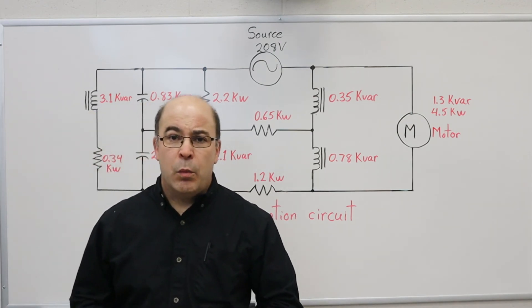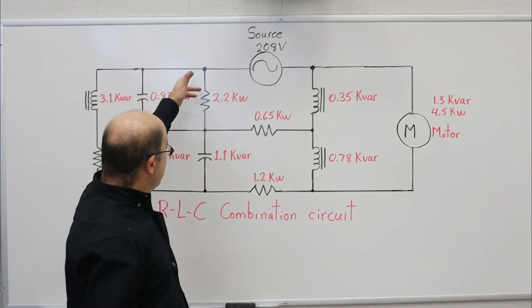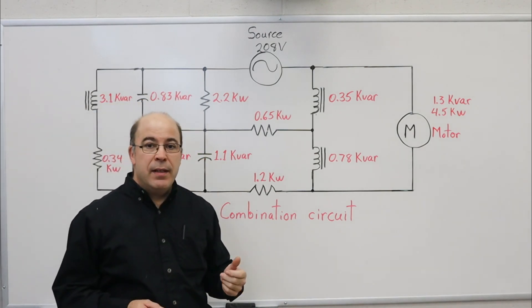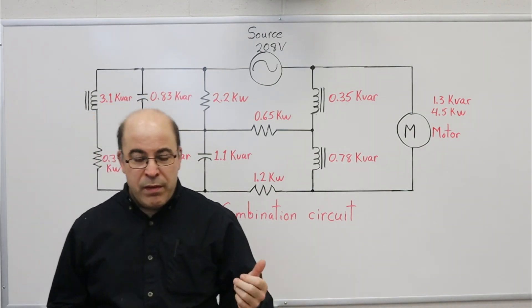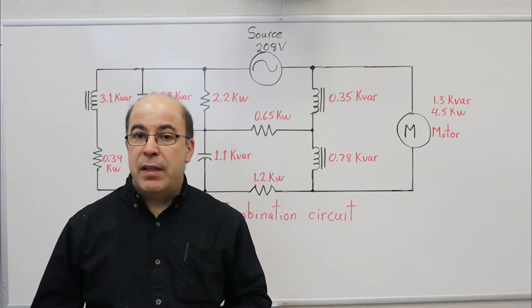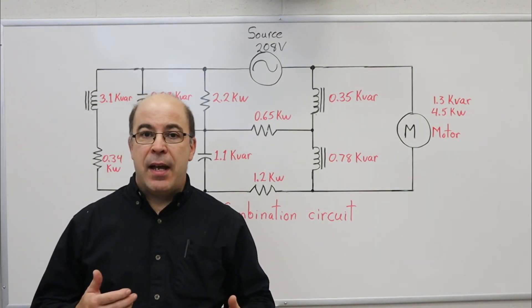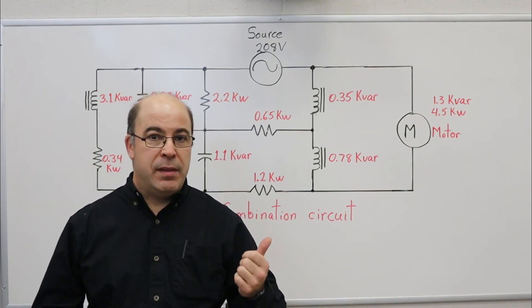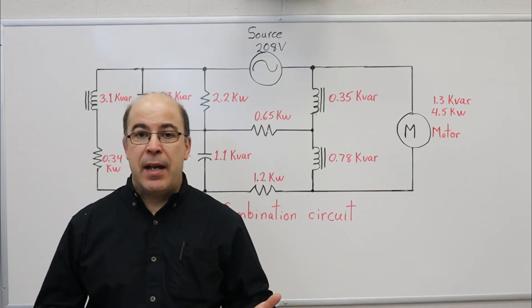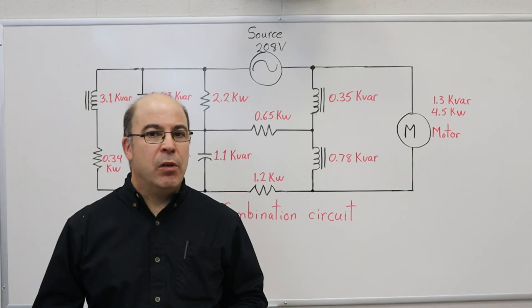So not only are we dealing with different branches, but we're also dealing with phase angle differences between the voltage and current at different points in the circuit because we have a mixture of resistance, inductance, and capacitance, which makes things more complex.